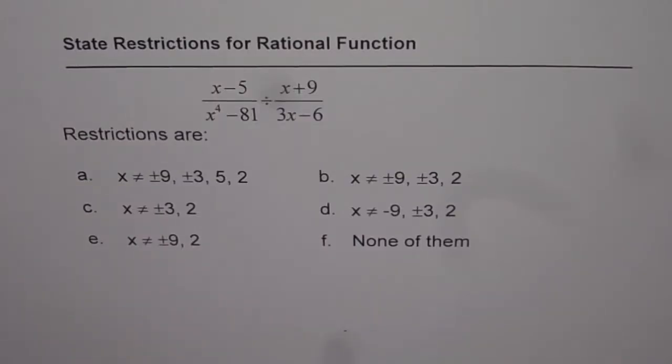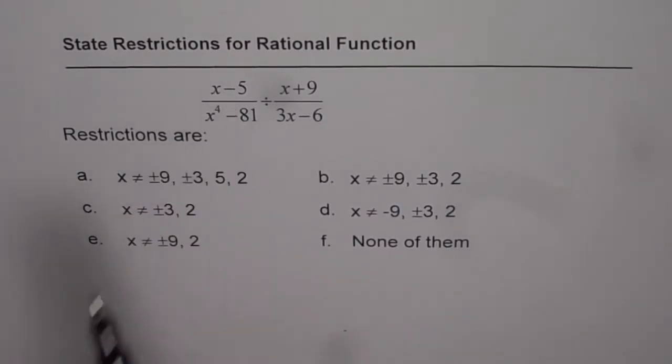Here is a multiple choice question for you. State restrictions for rational function. The function given is (x-5)/(x^4-81) divided by (x+9)/(3x-6).